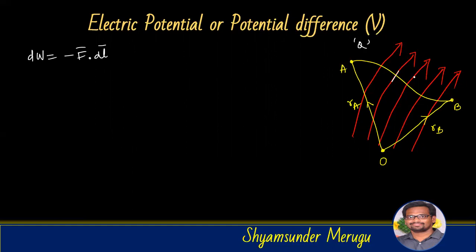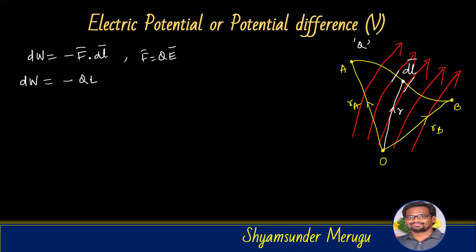Now the charge Q is moved a distance DL bar, and from this point to the origin we can say the distance is R. So to move this distance DL bar, the differential work done is DW equal to minus of F bar dot DL bar. Once we move the charge from one point to another in the presence of the electric field, the charge will experience a Coulomb force. The Coulomb force experienced by the charge is given by F bar equal to Q E bar. So we can write DW equal to minus of Q E bar dot DL bar. To calculate the total work done to move charge Q from point A to point B, we integrate both sides: W equal to minus of integration from A to B of Q E bar dot DL bar.